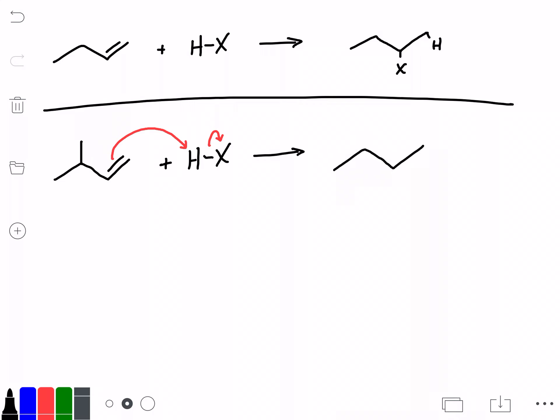And our intermediate will still be the same. That is, we'll have our hydrogen adding by Markovnikov's rule to give us a more stable carbocation. In this case, we've produced a secondary carbocation, and so that's better than the primary carbocation we could have had at the end.